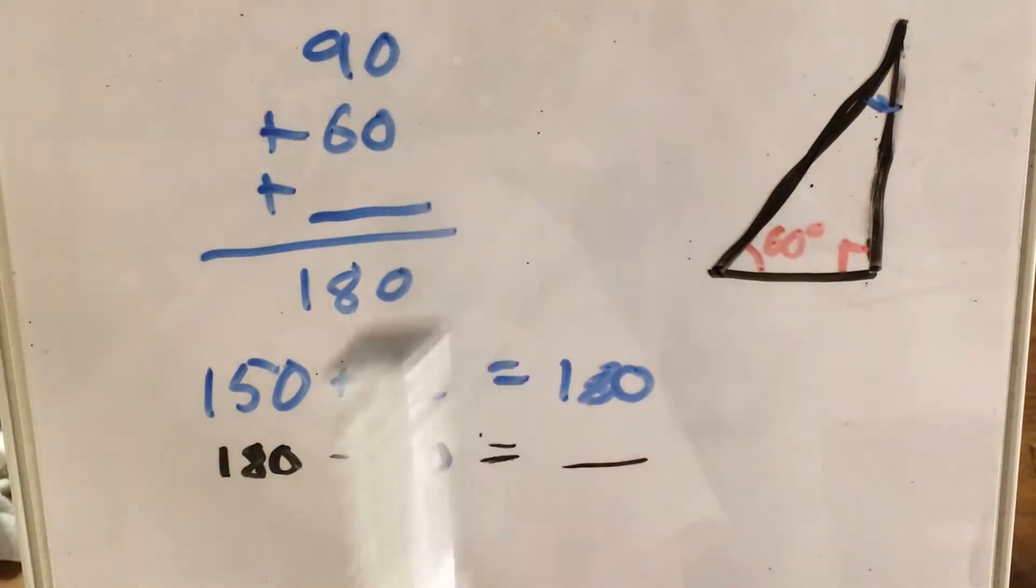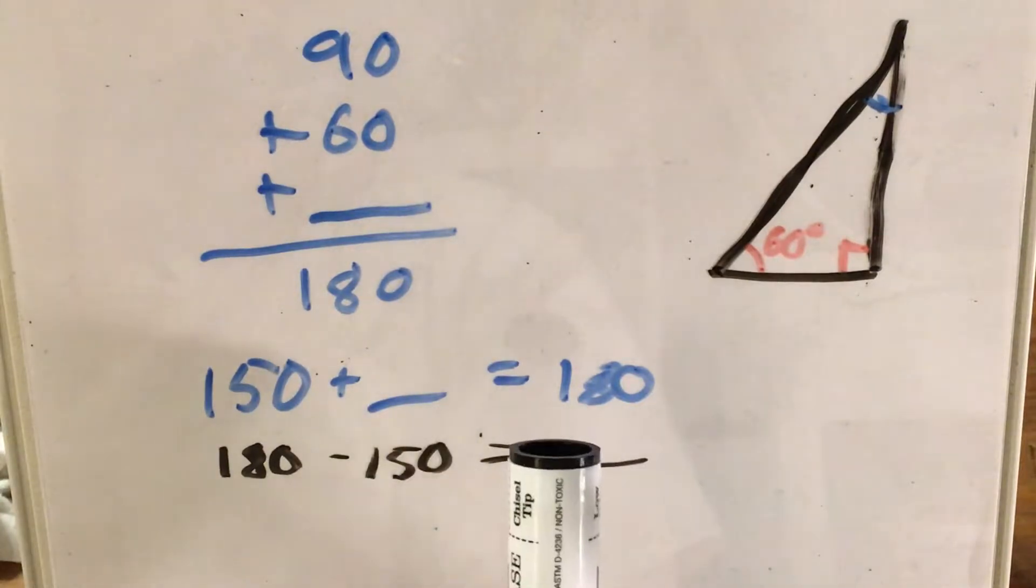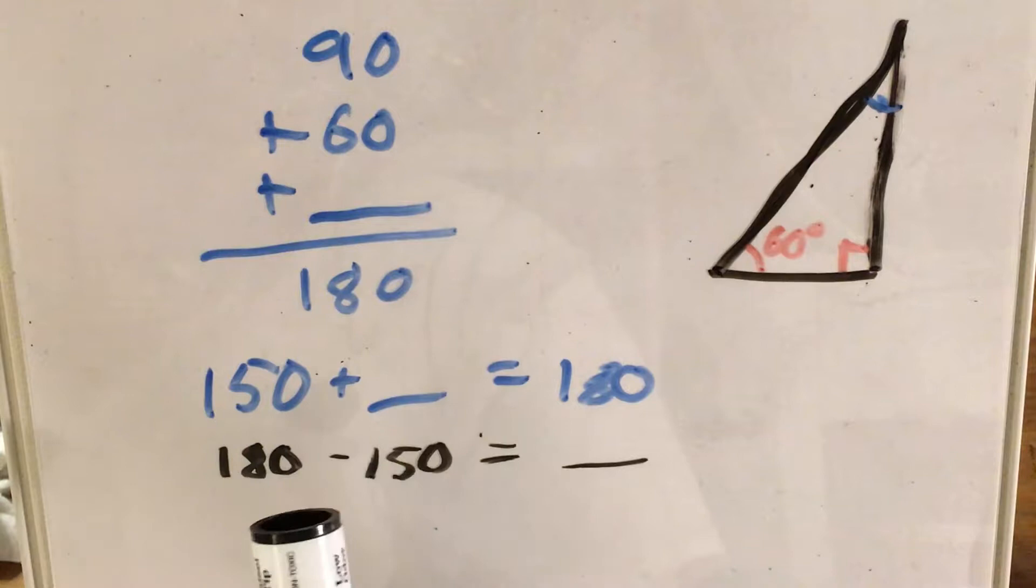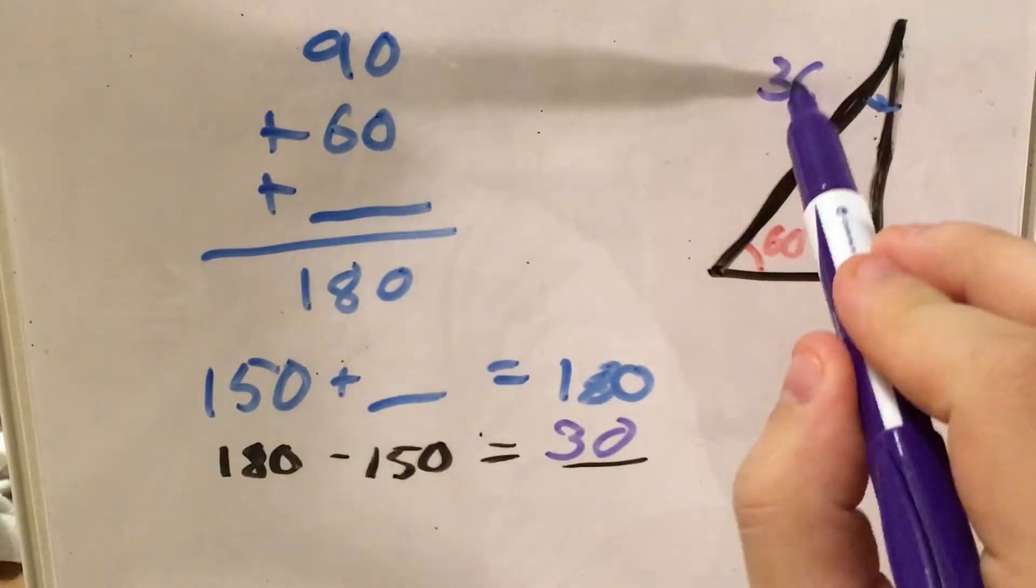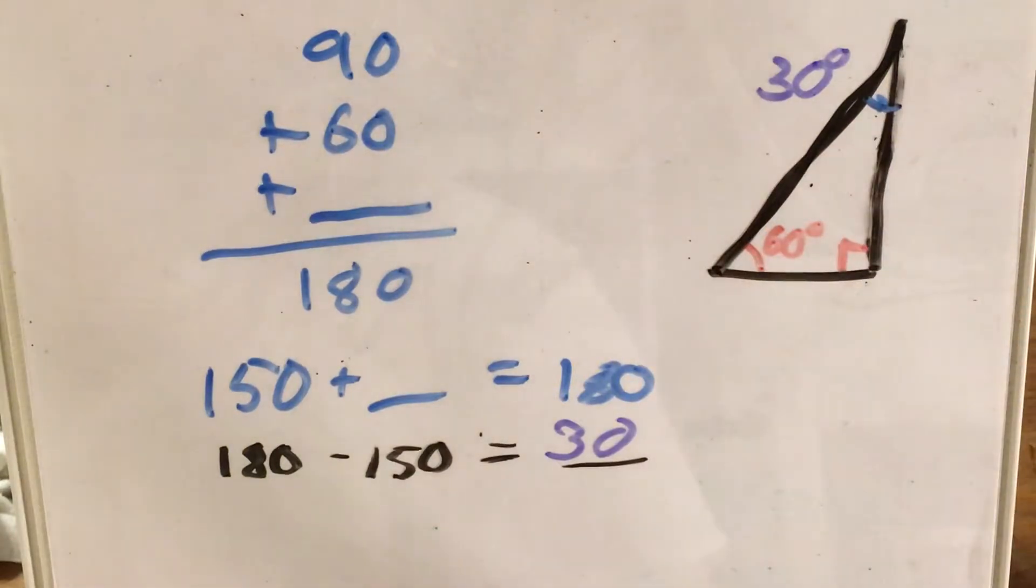So combining like terms, 90 plus 60 gets me 150. So 150 plus something equals 180. Using fact families or equations or however you want to think of it, I flip this around so that it now says that 180 minus 150 equals this unknown number. And using subtraction or using my calculator, however you would do a quick problem like this, I should get 30. So this angle here is gonna be 30 degrees if we have a 90 and a 60 already.